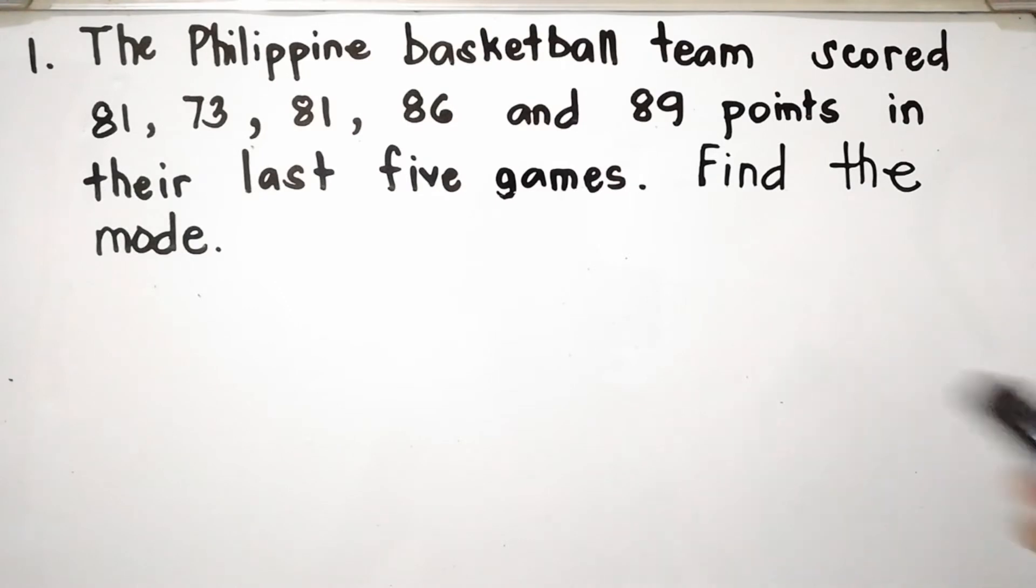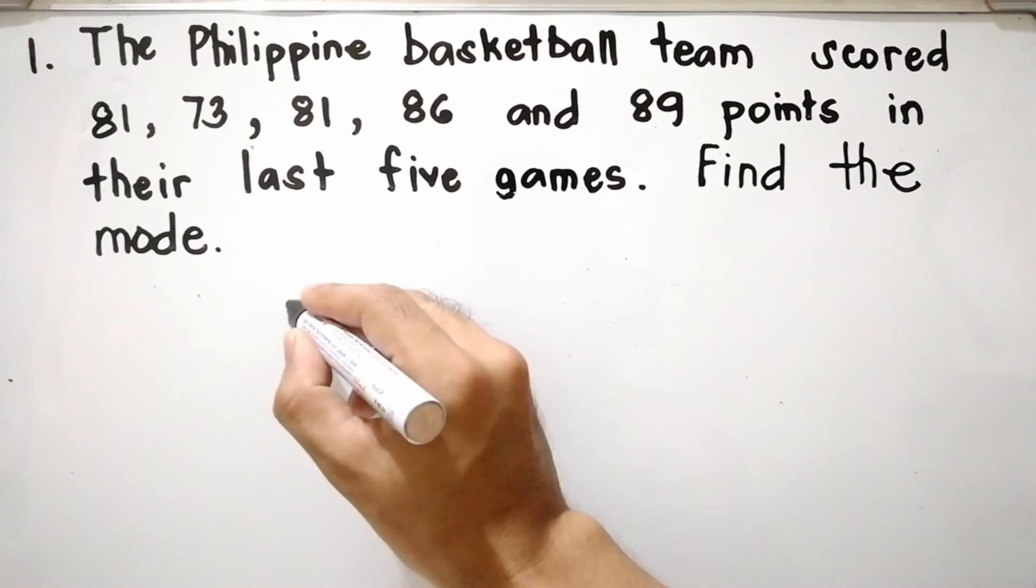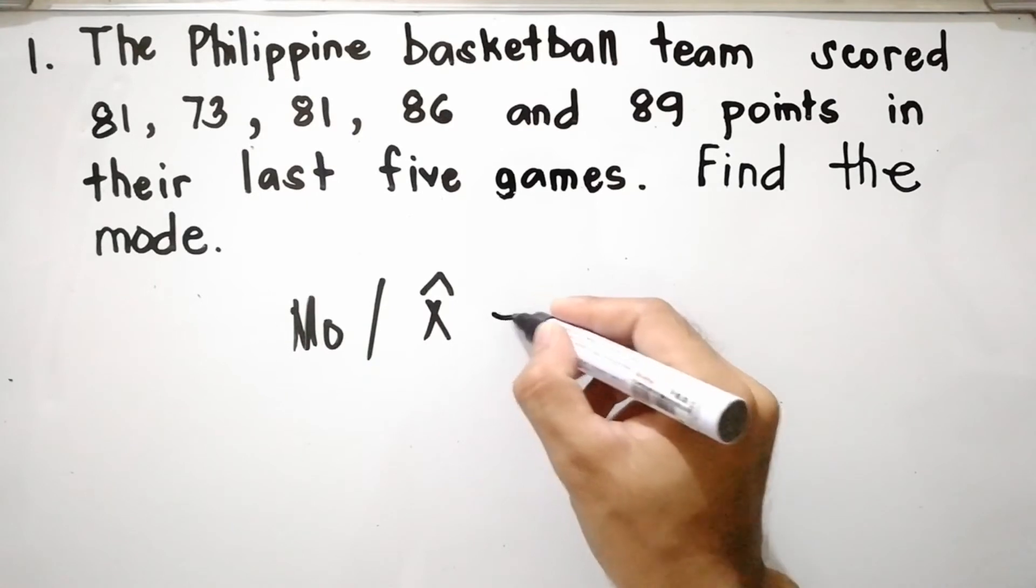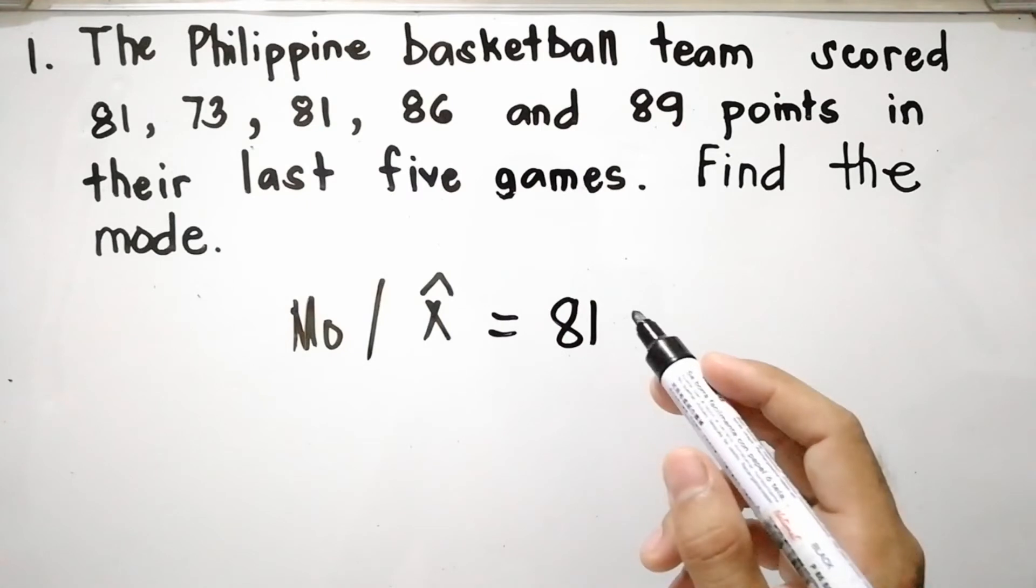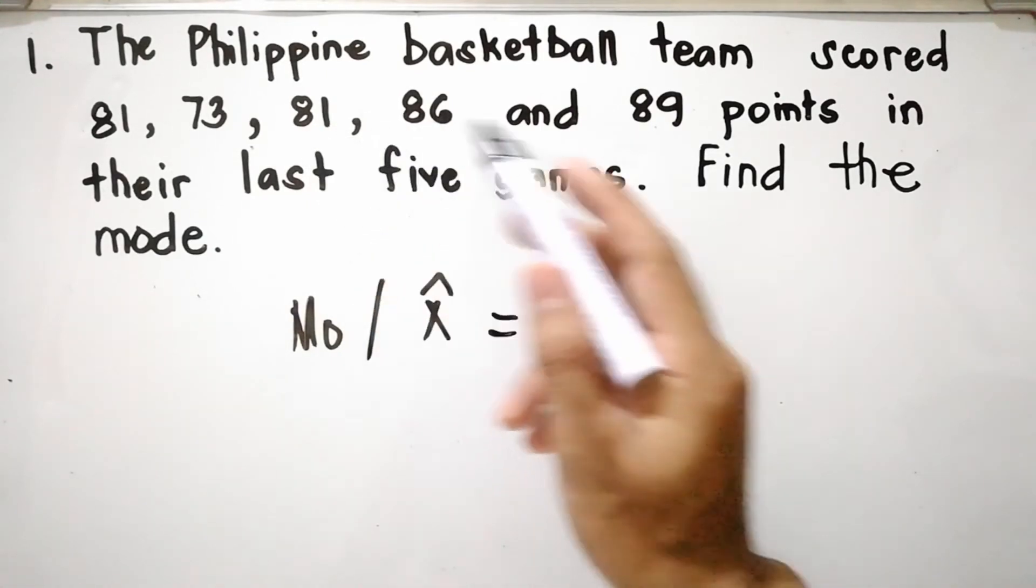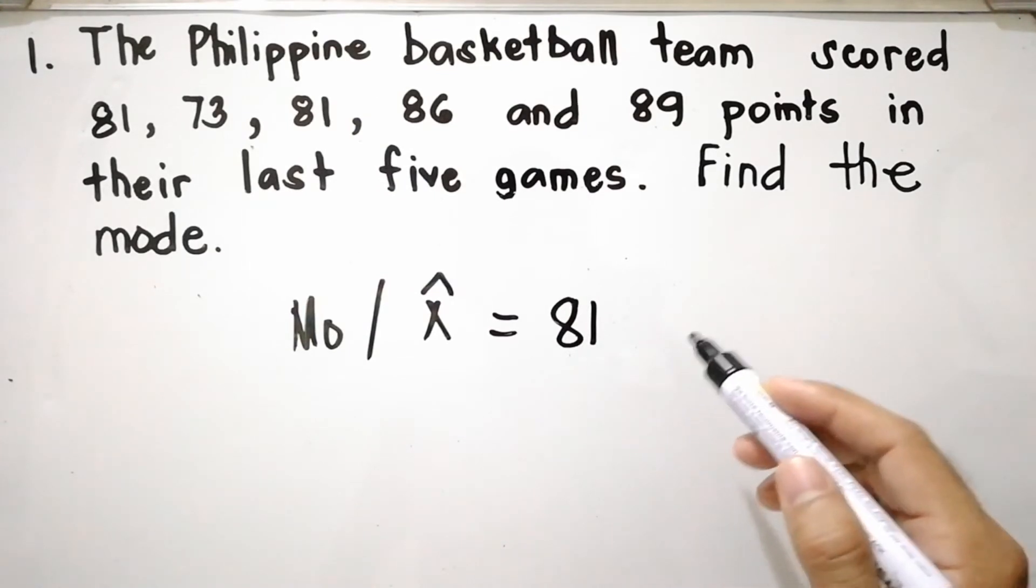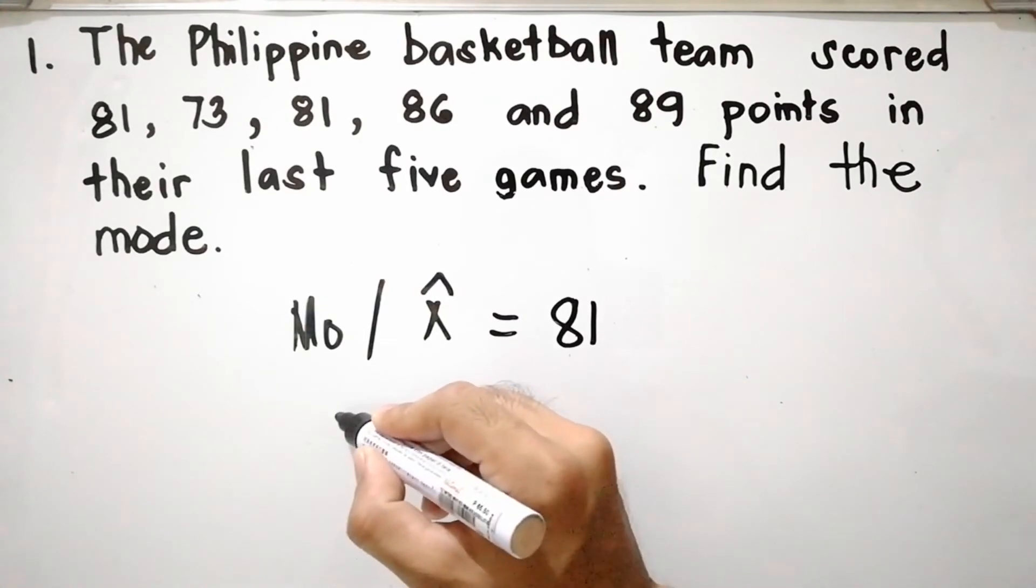The mode is the measure that occurs the most number of times or the most frequent value. It is denoted as Mo or x-hat, which equals 81, since 81 is repeated twice. Since we only have one value of mode, which is 81, it is said to be unimodal.